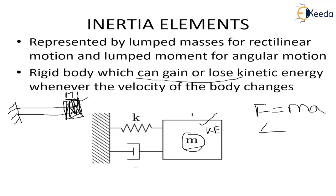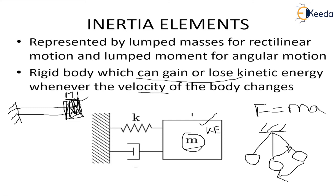Similarly, in the case of the pendulum, when deflection was taking place and it started moving from the equilibrium position, it was losing its kinetic energy which got converted into potential energy. Coming back, it started gaining kinetic energy because of the change in velocity of the body. Whenever there is a change in velocity, there is a change in kinetic energy that is being stored or lost by the body, and this rigid body is called the inertia element.